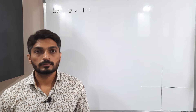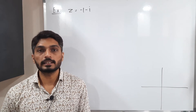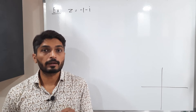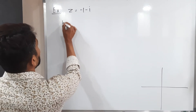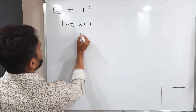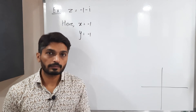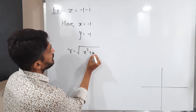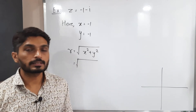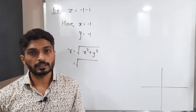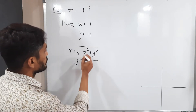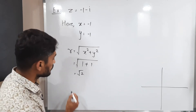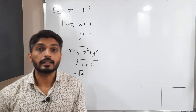Let us discuss this example. We have a complex number Z equals minus 1 minus i, and we have to express it in polar form. We need to find the values of R and theta first. Here the real part X is minus 1 and the imaginary part Y is also minus 1. Using the formula, R equals square root of X squared plus Y squared. Substituting, we get square root of 1 plus 1, so R equals root 2.